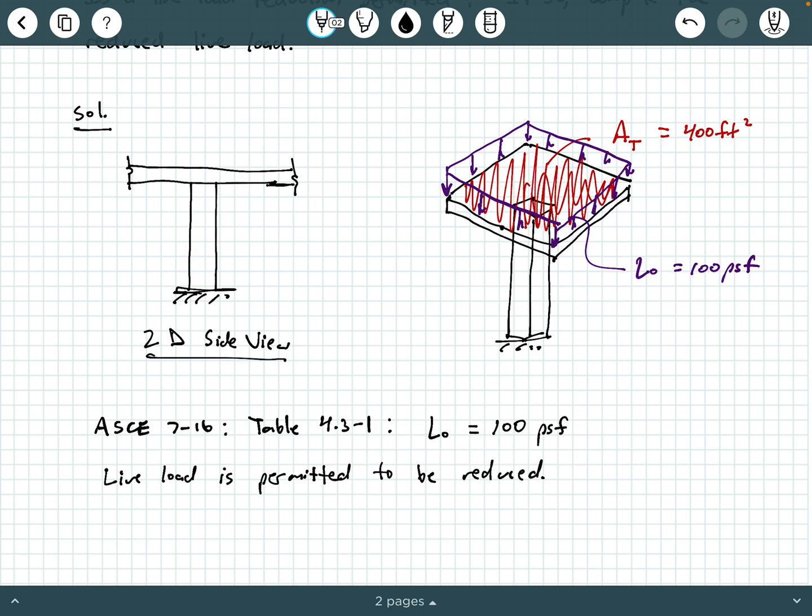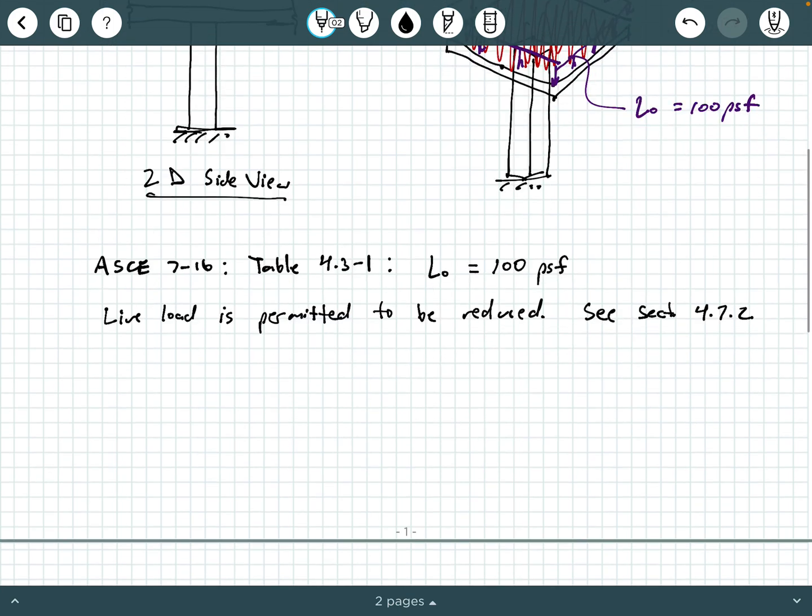So now what we're going to do is we're going to go to Section 4.7.2. So we're going to say C Section 4.7.2 of ASCE 7-16. And when we go there, we see our handy equation for reducing a live load. Now, the first thing we need to check is we need to check K_LL times A_T. And we need to see if it is, according to ASCE 7-16, is it less than or greater than or equal to 400 square feet?